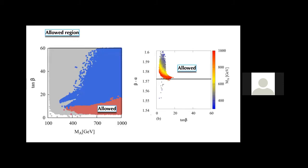Looking at the same results in the β−α plane, you see that it's very close to π/2. Applying all these results, β−α is very close to π/2, which you can say is either the decoupling limit or the alignment limit.